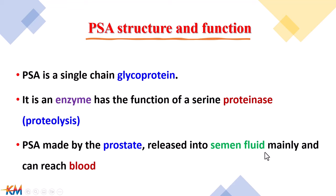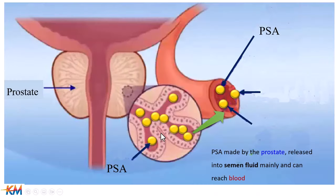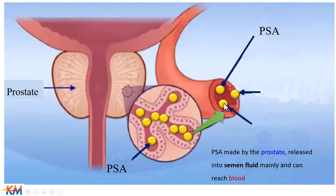Only small quantities of PSA can be absorbed and reach the blood. As seen in the picture, the prostate gland is present around the urethra and near the urinary bladder. The prostate gland secretes a number of elements, and PSA is one of them. PSA is secreted by epithelial cells into the lumen of the prostate gland, but a small percent can reach the blood and therefore can be measured in a serum sample.